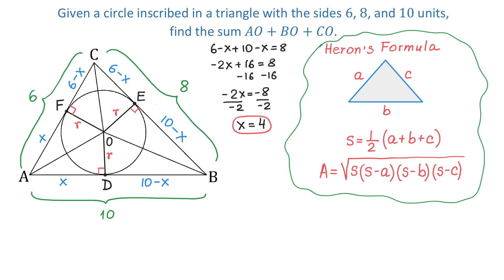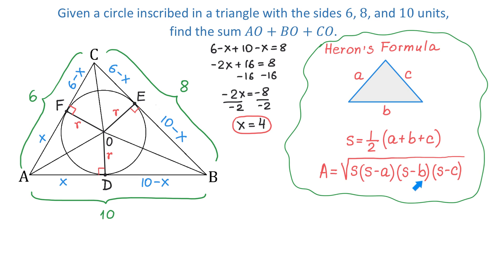Heron's formula has two parts. If we have a triangle with sides A, B, and C, first we need to find the number S — that is, half of the sum of A, B, and C. Once we find this number, the area is equal to the square root of S times S minus side A, times S minus side B, and times S minus side C.